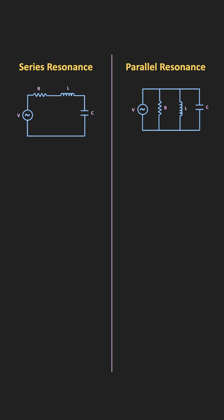This is the overall impedance of the series RLC circuit. At resonance, the inductive and the capacitive reactances will be equal, so they will cancel out each other. Due to that, at resonance, the overall impedance of the circuit will be minimum. Moreover, it will also be purely resistive.